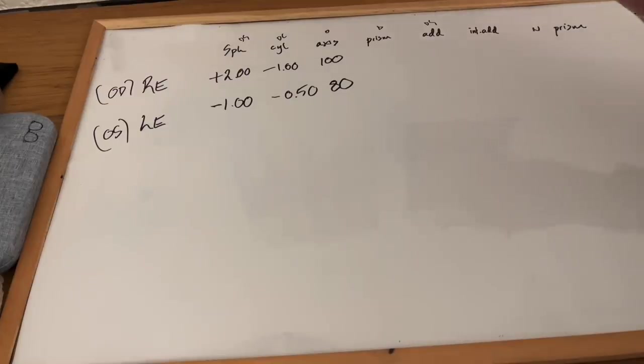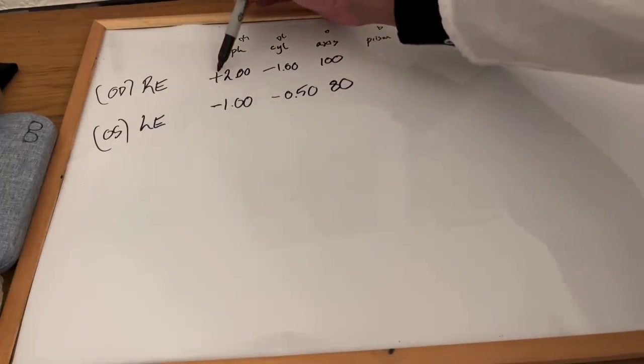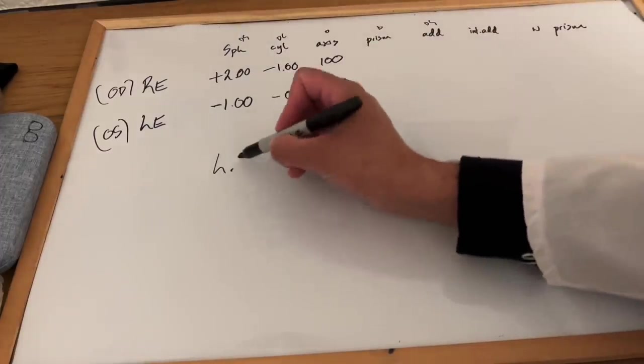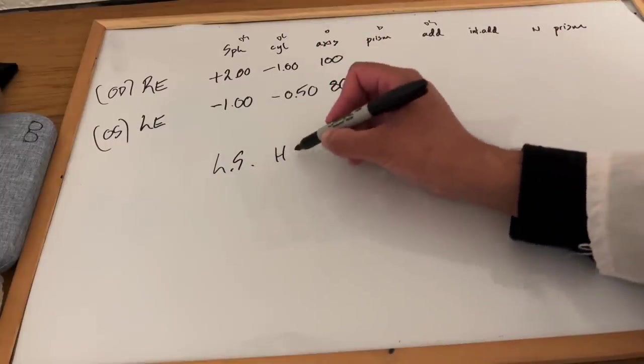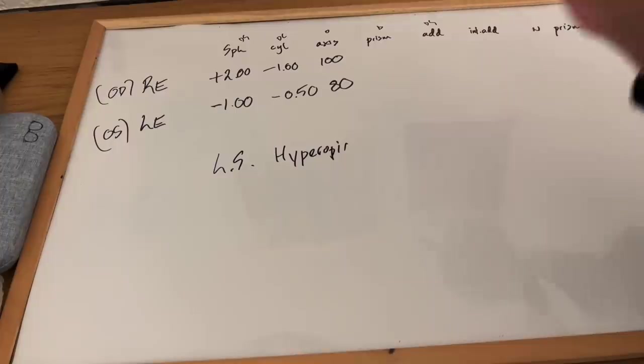We're going to take the right eye first. Now, just focusing on the spherical column here, if you see a plus symbol before the number, that means you are long-sighted or hyperopic.